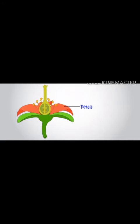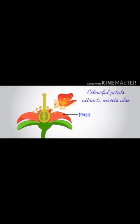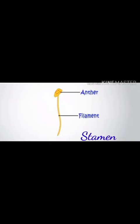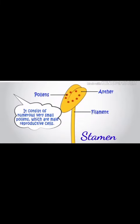Petals make flowers look beautiful and also attract insects. The third part consists of the male reproductive part called stamens. Each stamen has two parts: the anther and the filament. The swollen head is called the anther — it consists of a number of very small pollens, which are male reproductive cells.